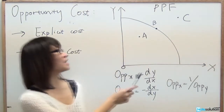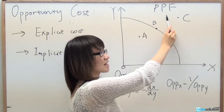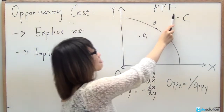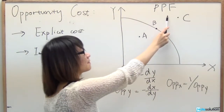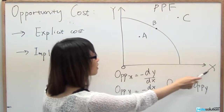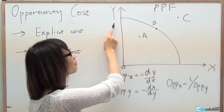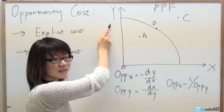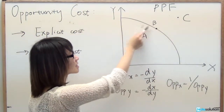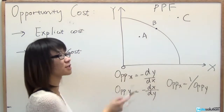A key concept for opportunity cost is the Production Possibilities Function, or PPF line. The PPF line describes the relationship between item X and item Y for limited resources, combining all the points you can consume given those limited resources.